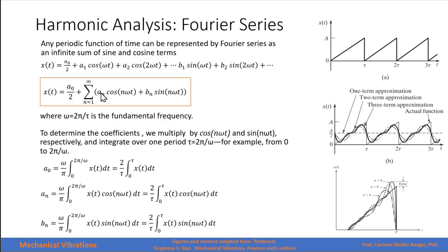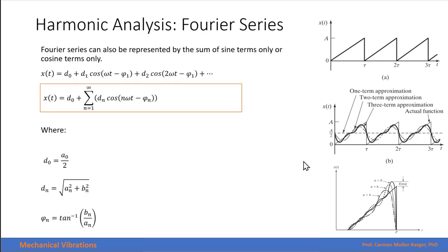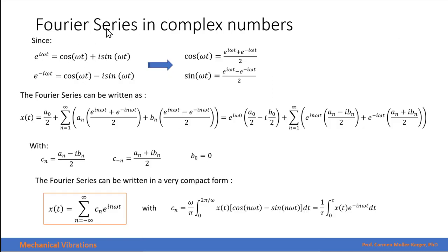The coefficients of the Fourier series can be found using integral expressions, where the function f(t) is the one we want to represent. The Fourier series can also be represented as a sum of single sine or cosine terms with a phase angle, in which case the coefficients are derived from the original an and bn coefficients. It can also be represented using complex numbers in Euler form, where cosine is expressed as the sum of two exponentials and sine as their difference.